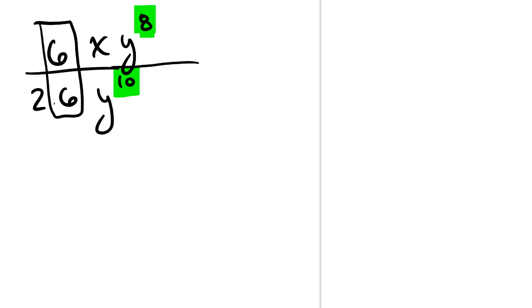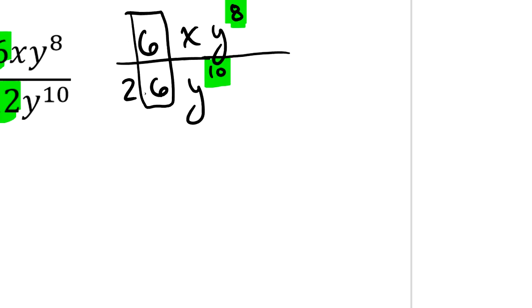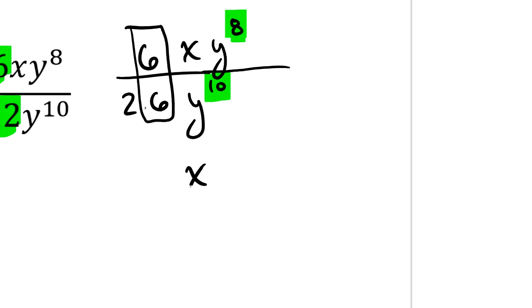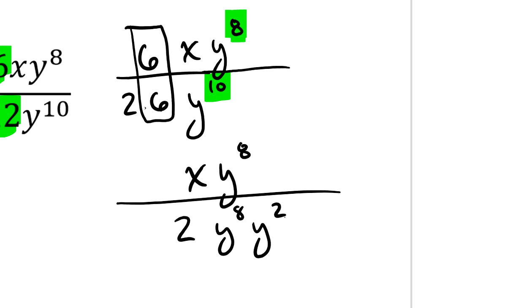So I guess I could write it this way as well. I could say, hey look, this is going to be an x and then y to the 8th power. And in my denominator, I'm going to have a 2, and I'll have a y to the 8th times a y squared. So what I've done is I've chosen to let myself see this.